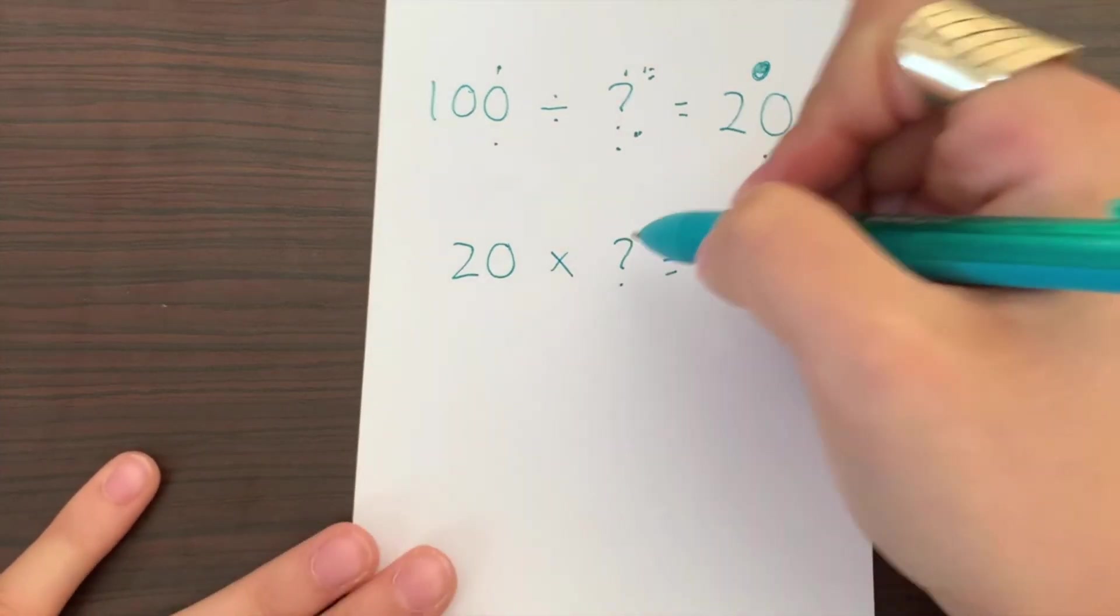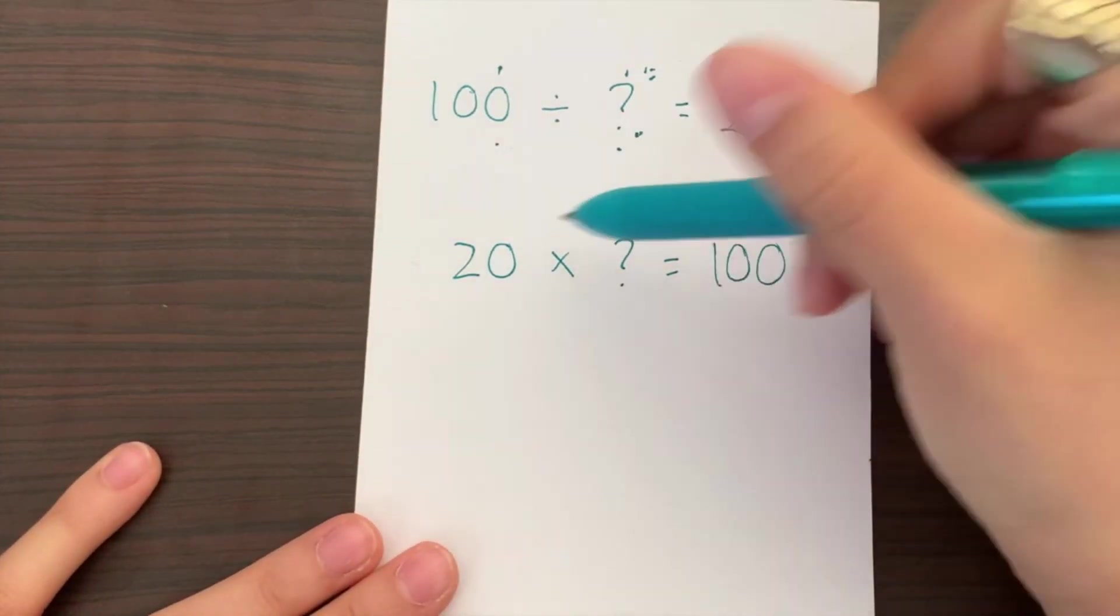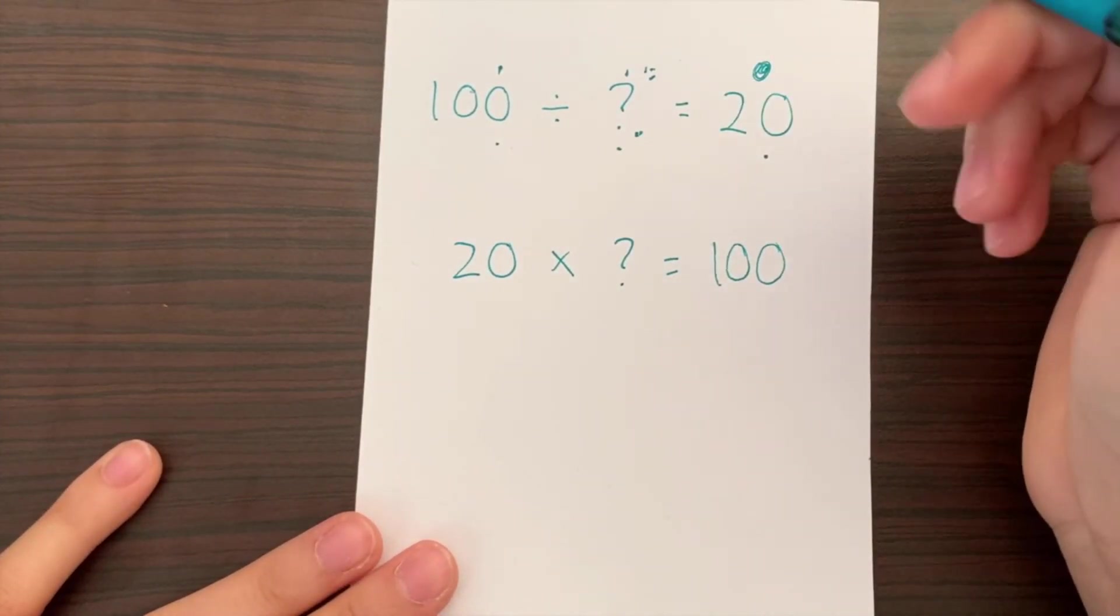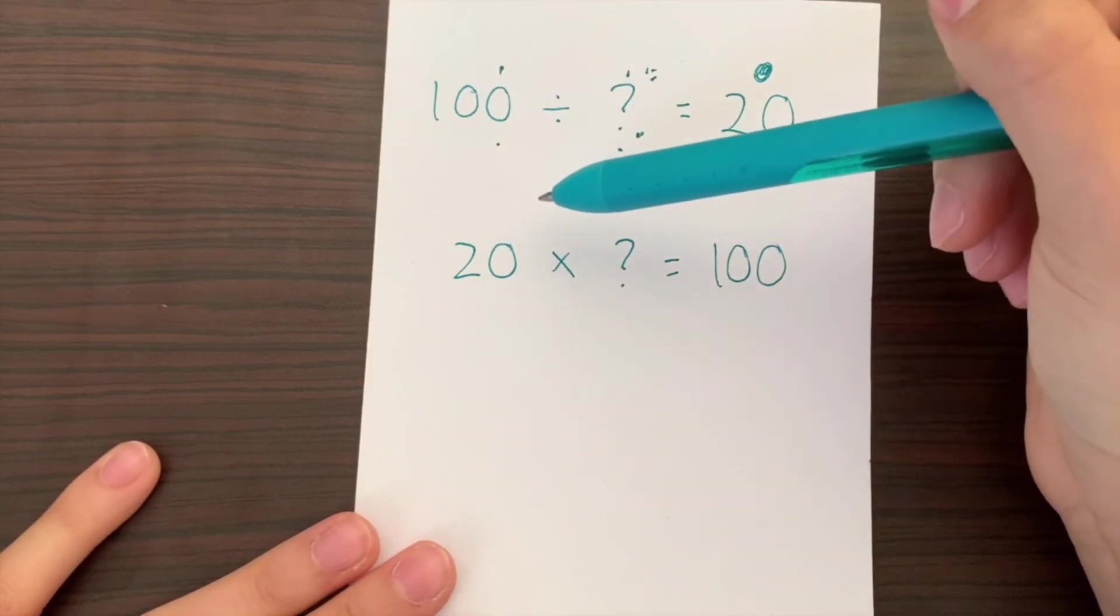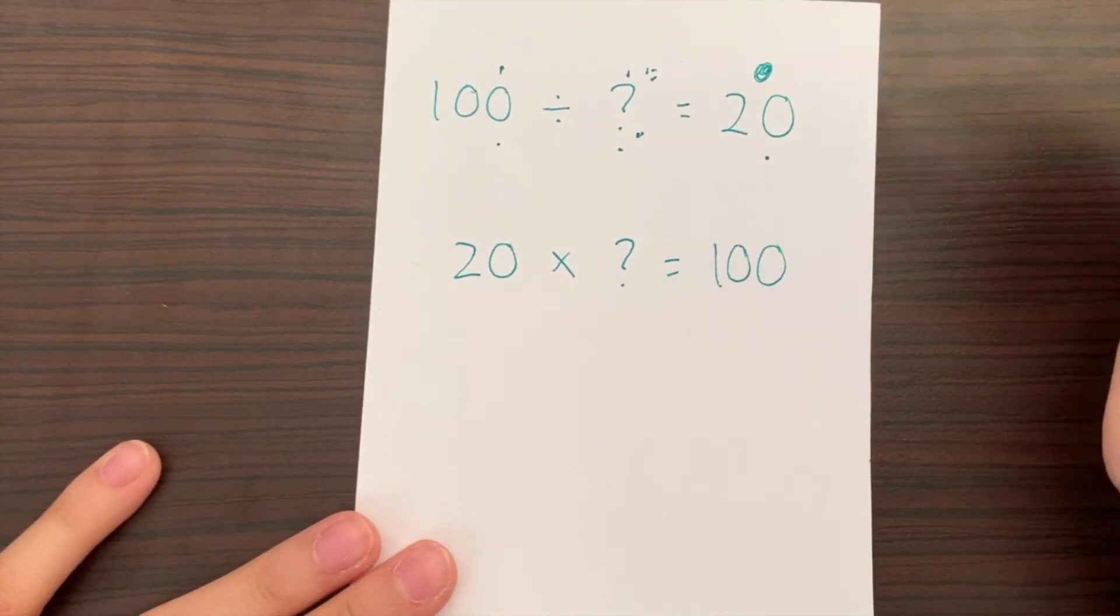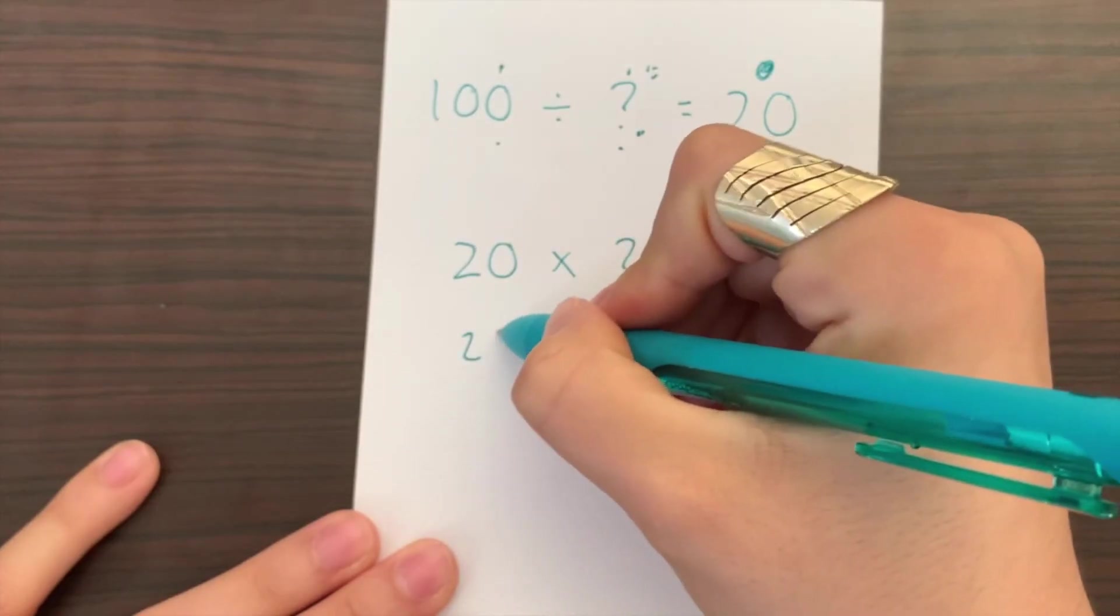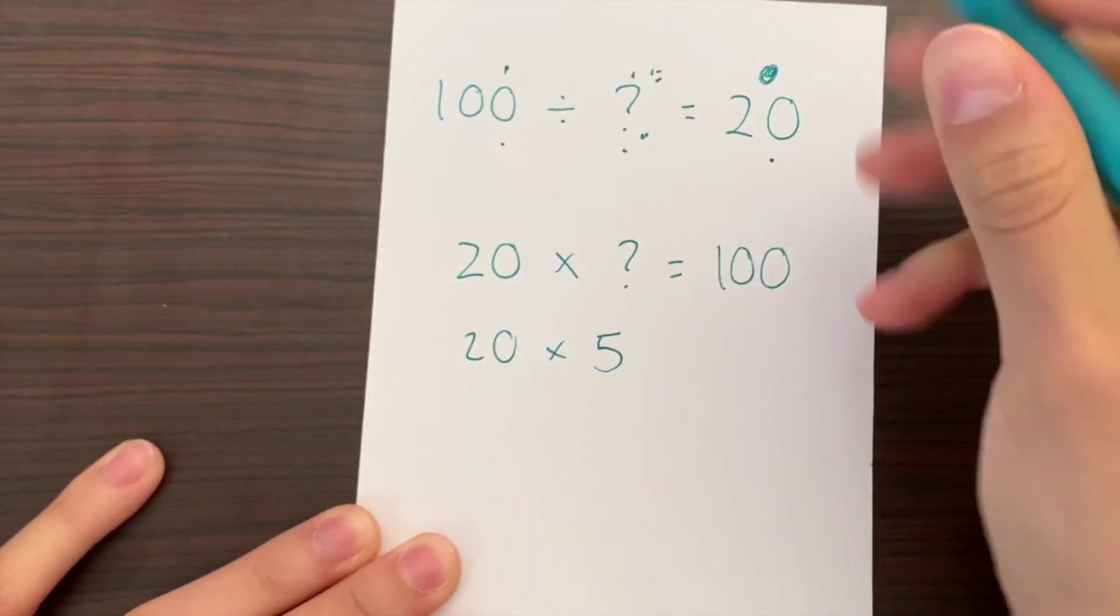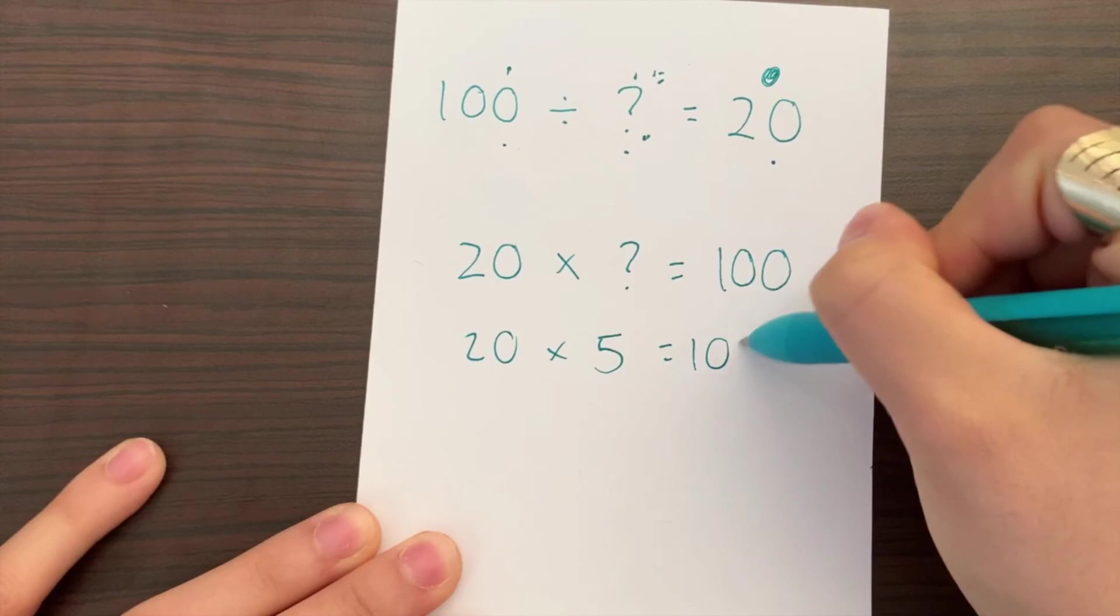So again, if you're really good at multiplying, you can go ahead and count by 20s and find what can we multiply 20 by to get 100. So that would look like 20 times 5 equals 100.